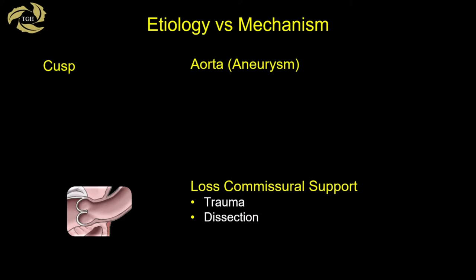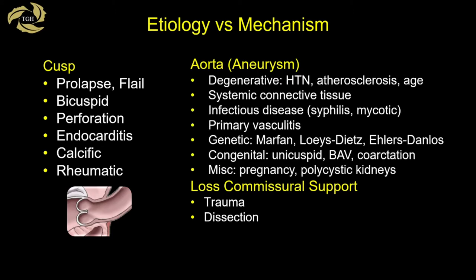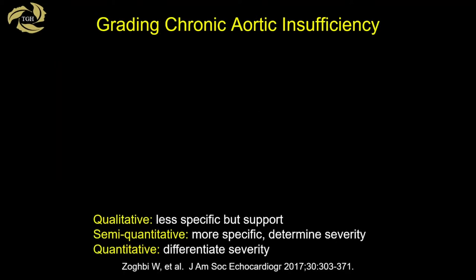It's important to remember that etiology and mechanism are two different concepts. Etiology is the cause of the problem; mechanism is the structural abnormality present. Cusp problems include prolapse, bicuspid valve, perforation, endocarditis, calcific, or rheumatic disease. Aortic aneurysms can result from genetic problems, congenital causes, systemic connective tissue disease, or most commonly hypertension and age. Trauma and dissection can also cause AI through loss of support.